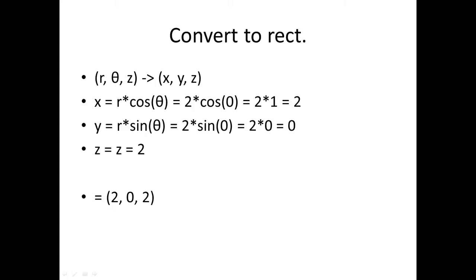We're going to plug R and theta into the first equation, which gives us 2 times cosine of 0, and that will get us 0. We're going to plug the same variables into the second equation, which gives us 2 times sine of 0, and that will also get us 0. The Z just transfers over completely, so the 2 becomes a 2, giving us rectangular coordinates (2, 0, 2).